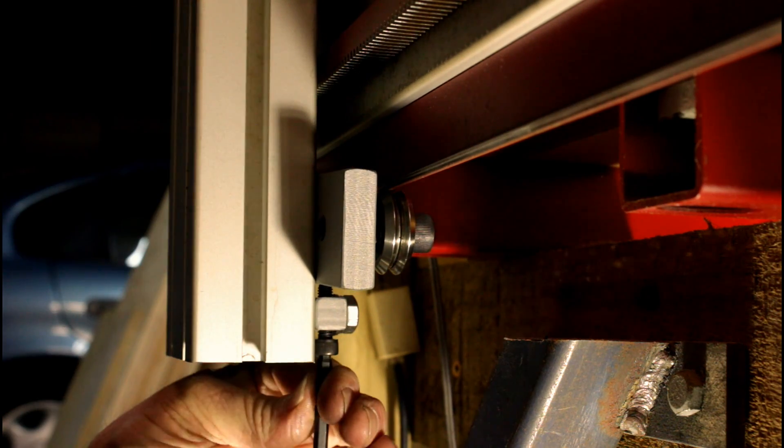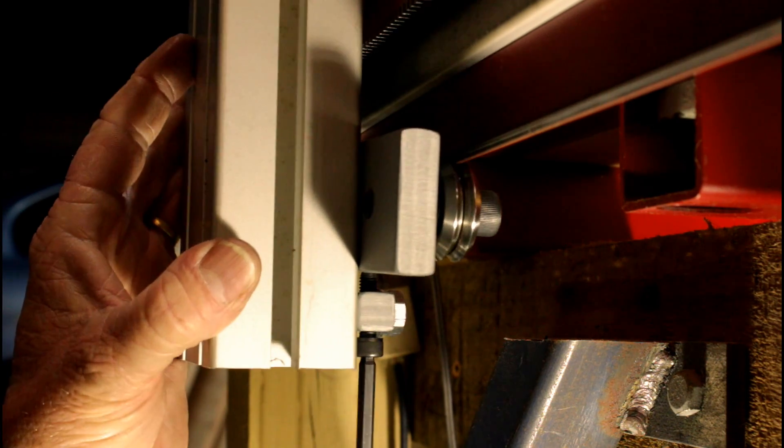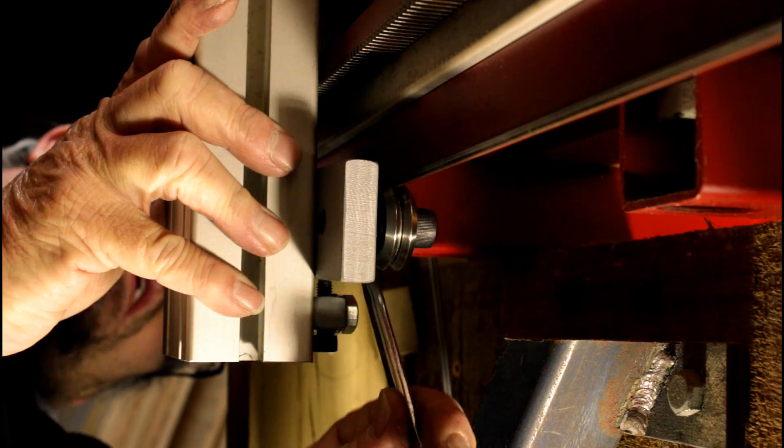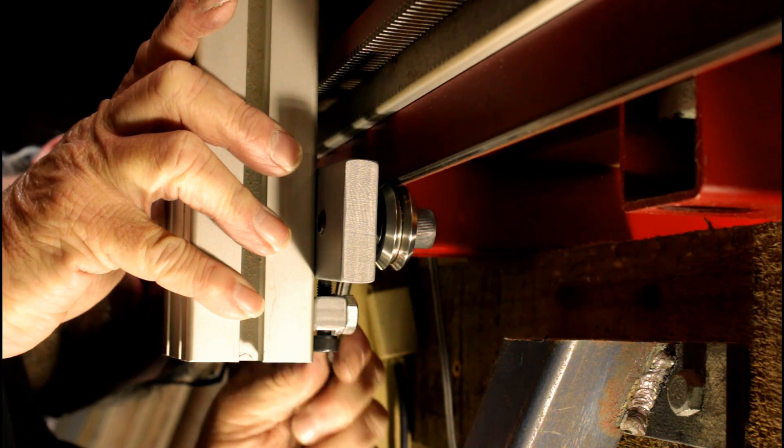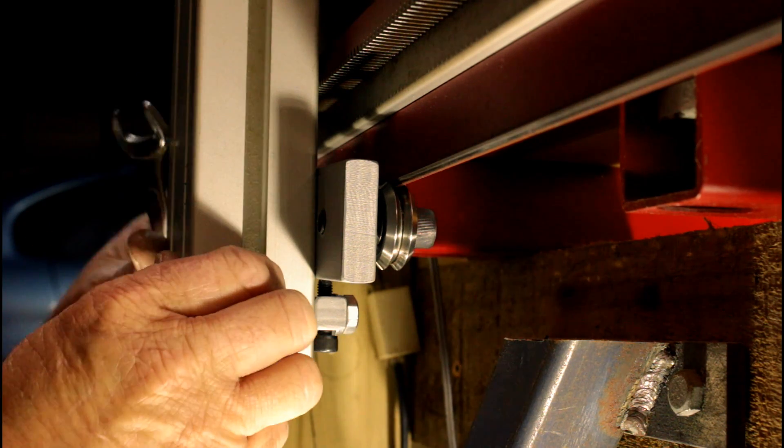I need to tighten it up so that it just nicely rubs against the rail there, and finally lock the bottom bolts in position. It should now run nicely along the rail.